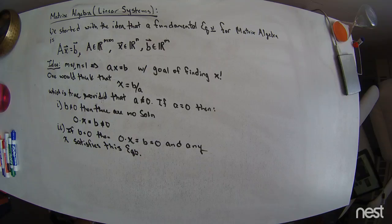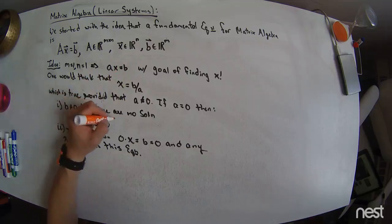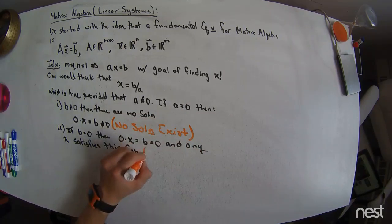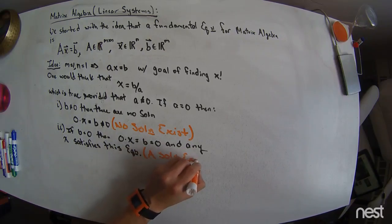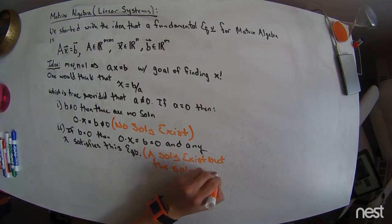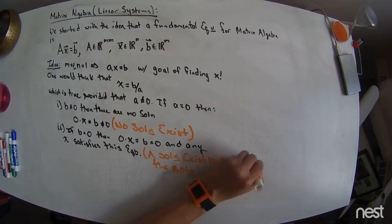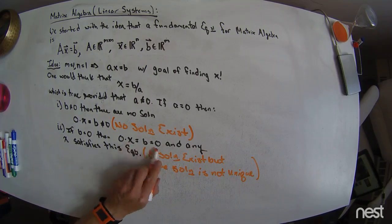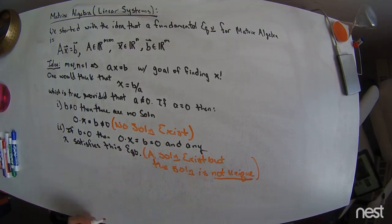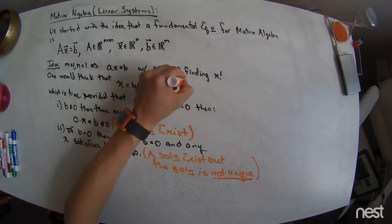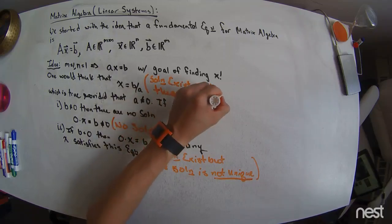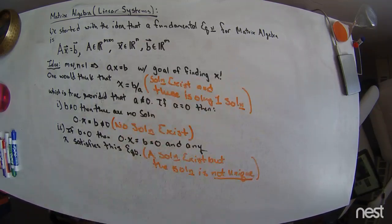All right, and so what we get into here is there's this idea of a trichotomy of outcomes. No solutions exist. A solution exists, but the solution is not unique. What is meant by this is, like, if you put a 2 right there, well, 0 times 2 equals 0. That's fine, but you could also put a 3 right there. There are infinitely many solutions that you could put there. And this says that a solution exists, and there is only one solution. So it exists, and it is unique.